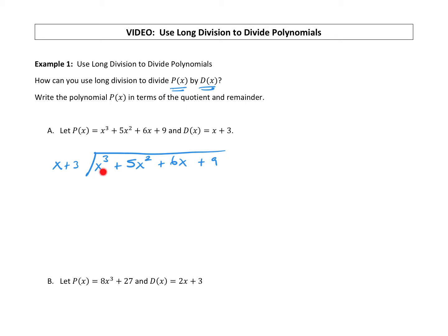We take the leading term of this polynomial and divide it by the leading term of that polynomial. I like to do that work off to the side. We have x³ divided by x — when dividing the same base, we subtract exponents — which leaves us with x². So I'm going to put x² up top.